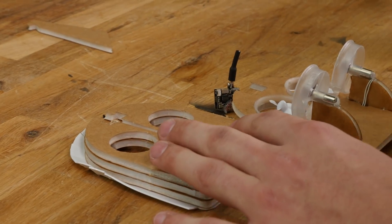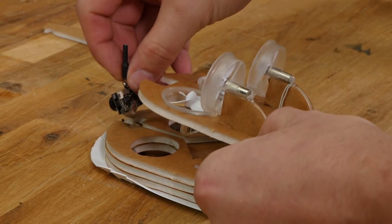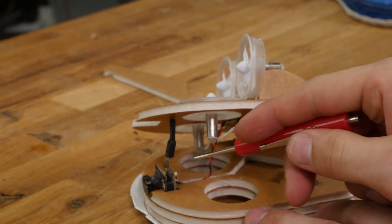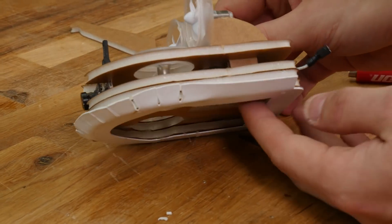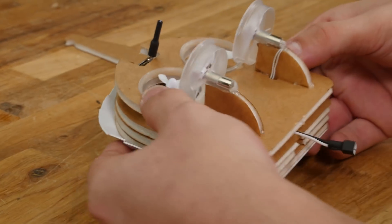For first person view, simply put a dab of hot glue in this cavity. Make sure your wires are in the groove, and your back fins are lined up, so you can push it down.